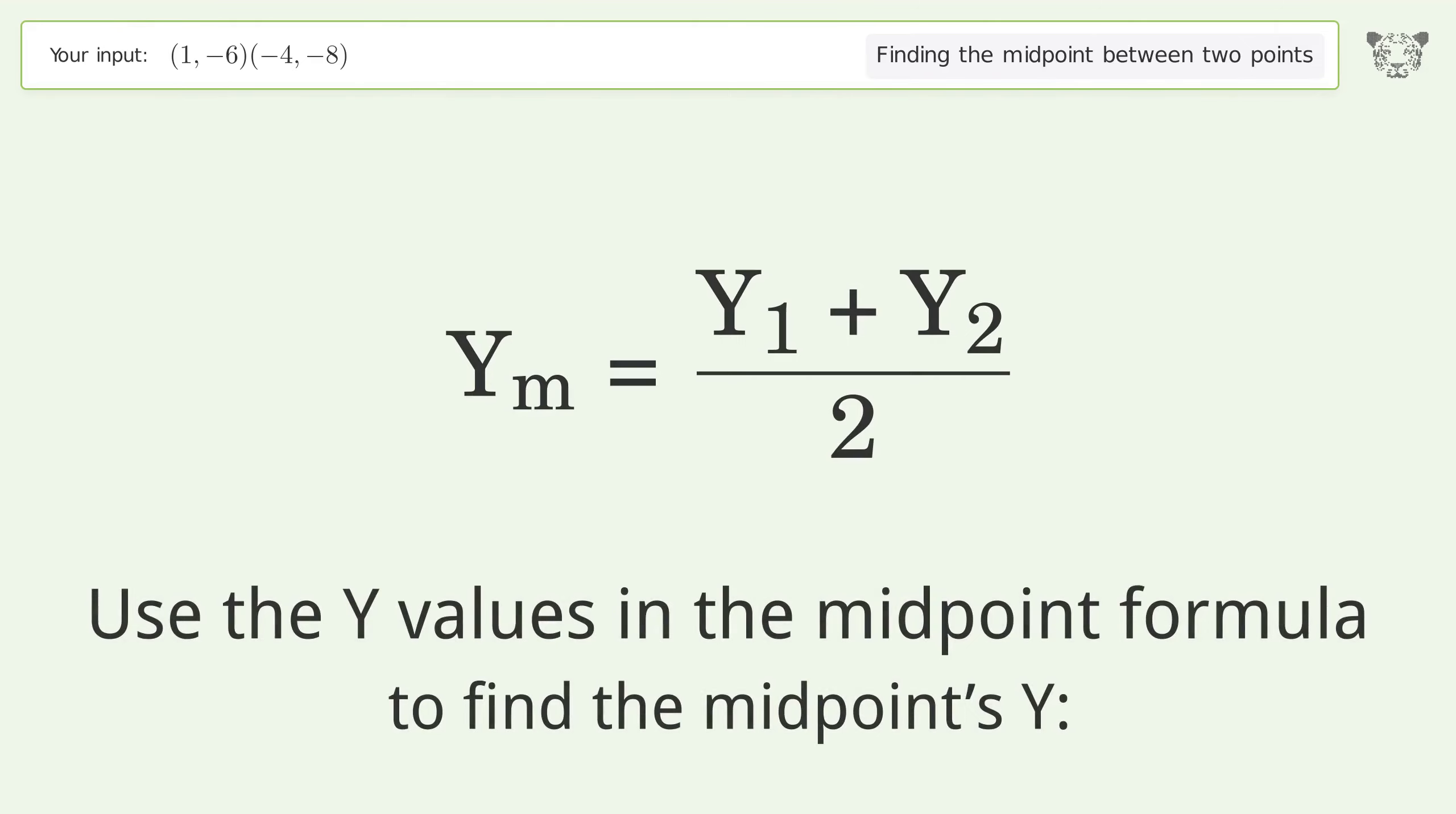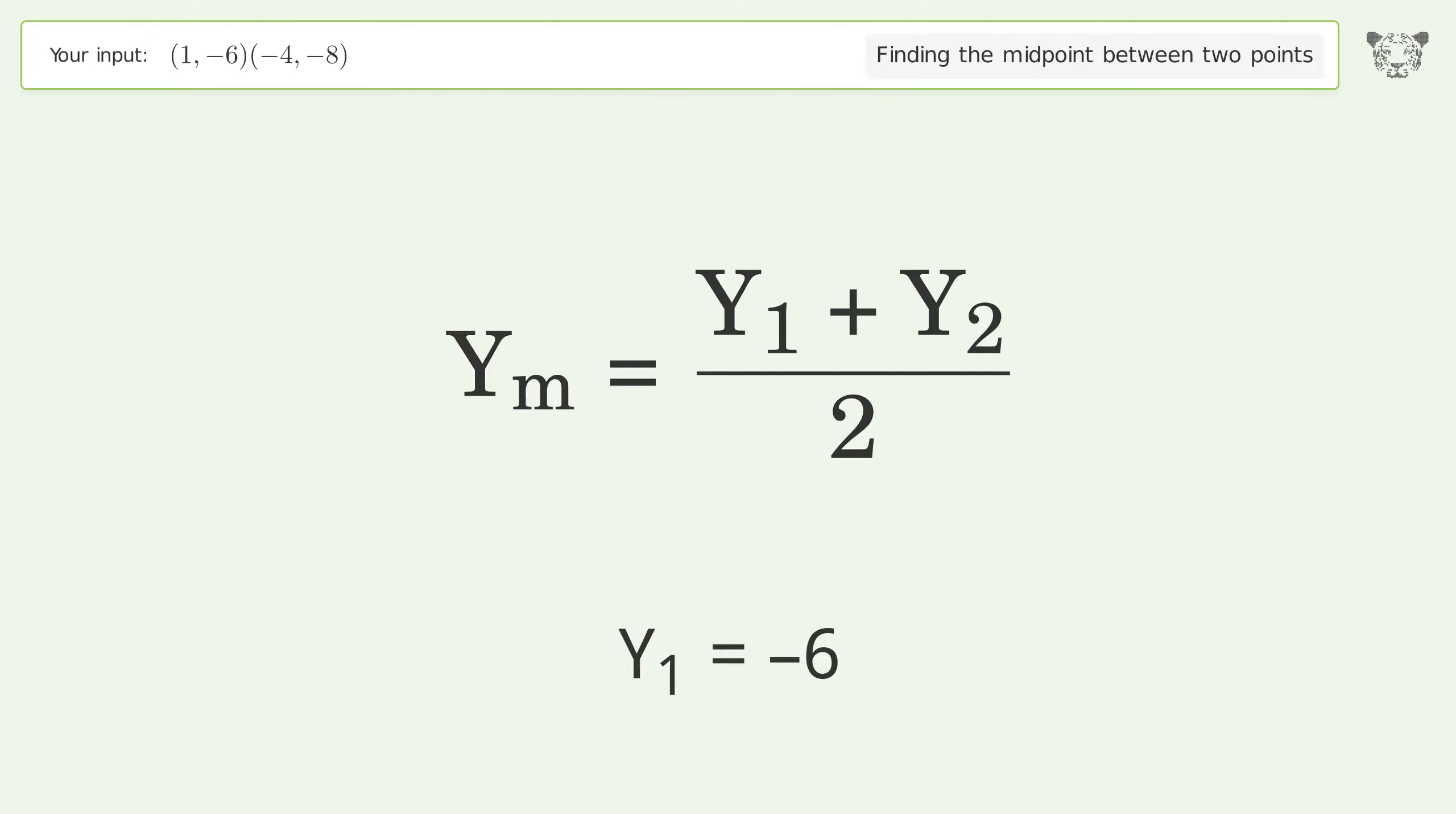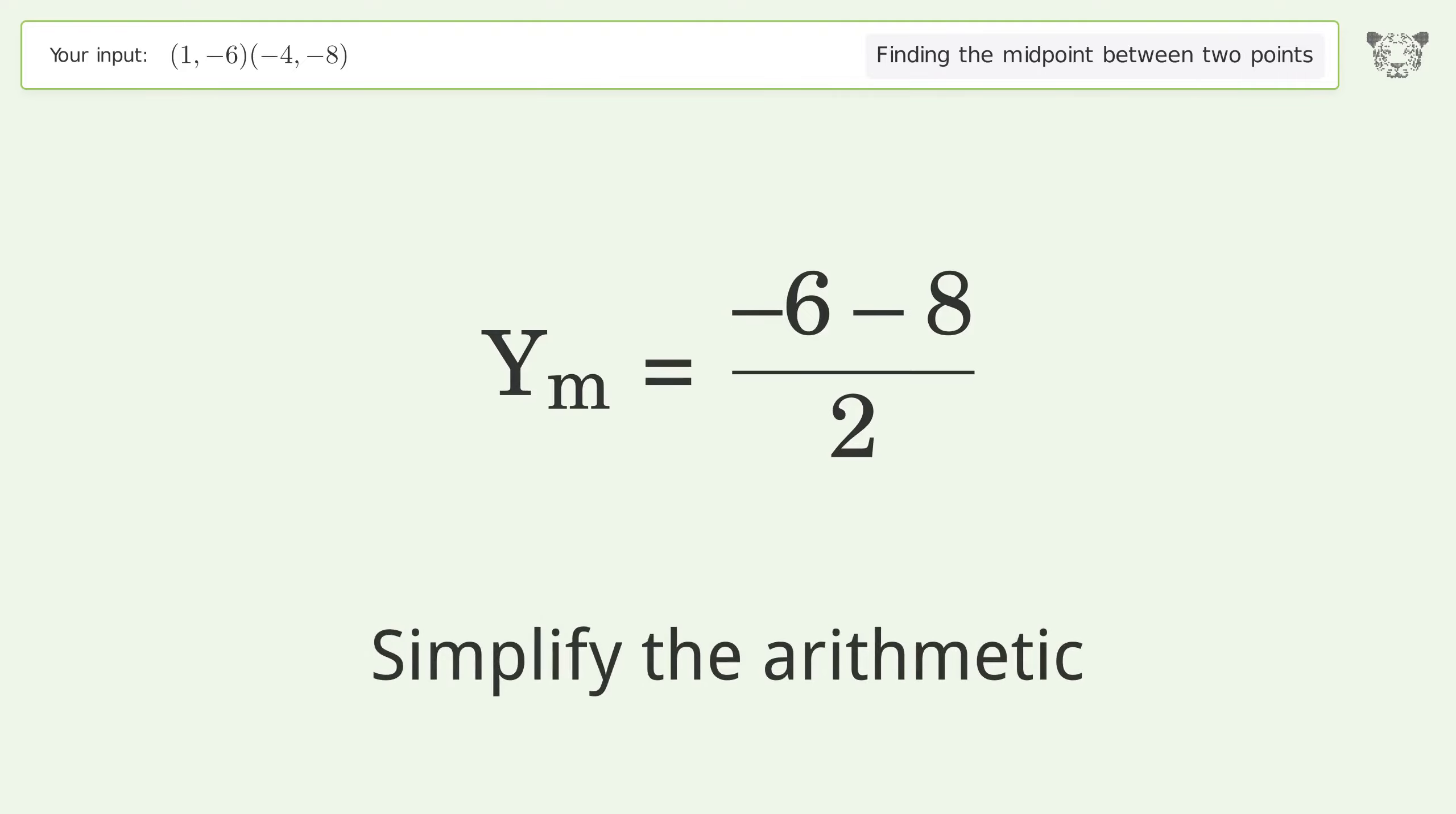Use the y values in the midpoint formula to find the midpoint's y-coordinate. y1 = -6, y2 = -8. Simplify the arithmetic.